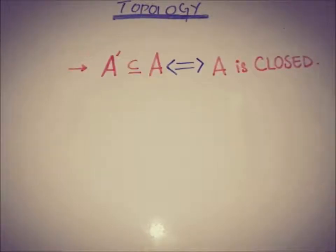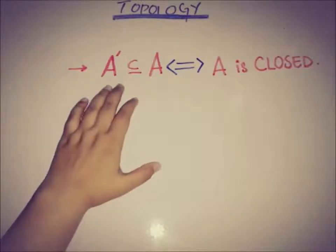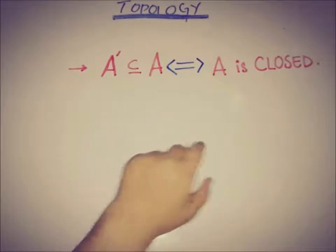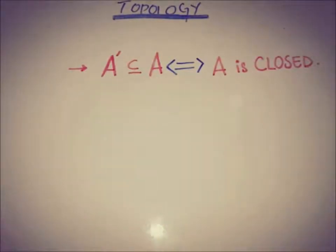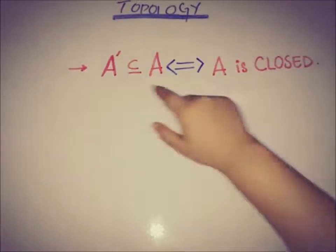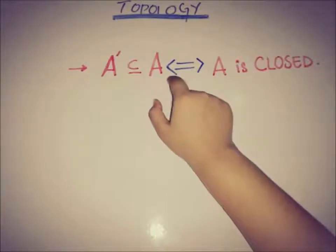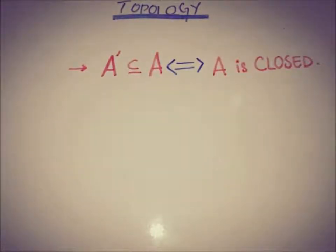The relation between the closure of a set and the accumulation points is this: the set of accumulation points A' is a subset of the set A. This implies that the set A is eventually a closed set. And if we know that a set is closed, then we can prove that the accumulation set A' is a subset of A.